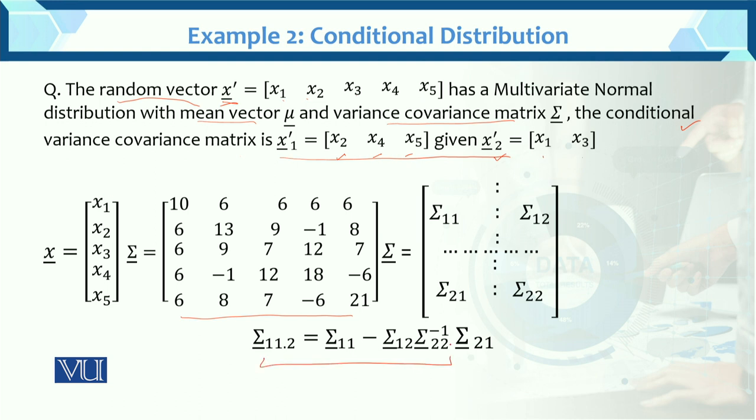And this is the variance-covariance matrix formula. This is the variance of Σ11.2. How are you partitioning it further? Just check here.